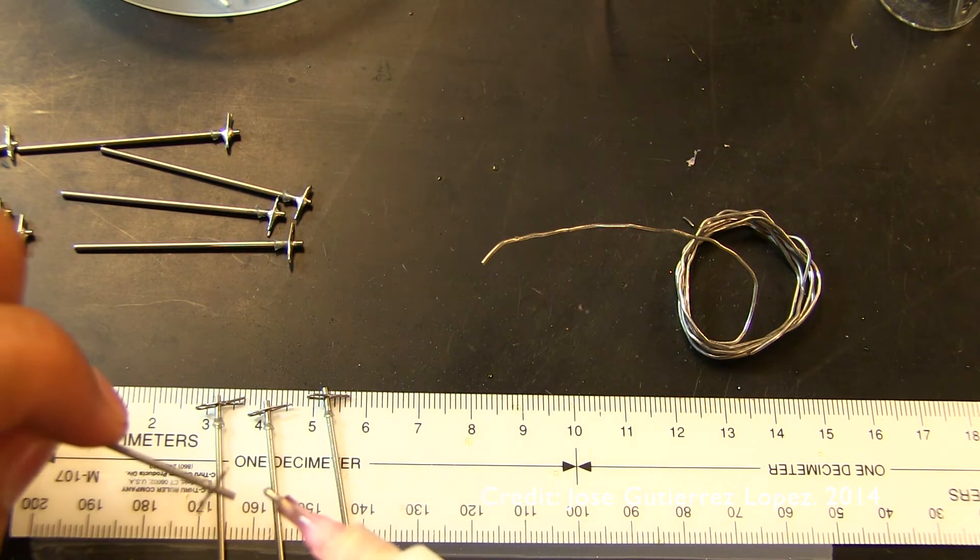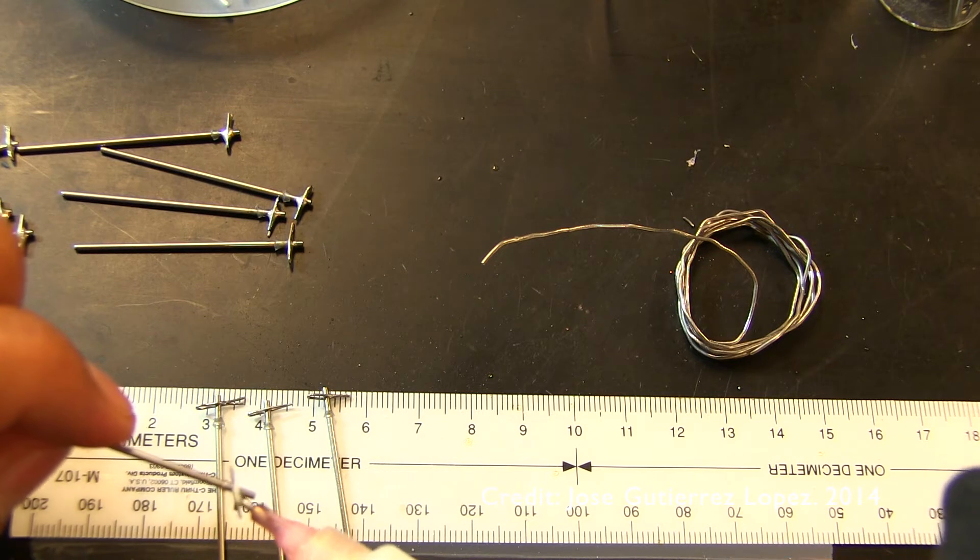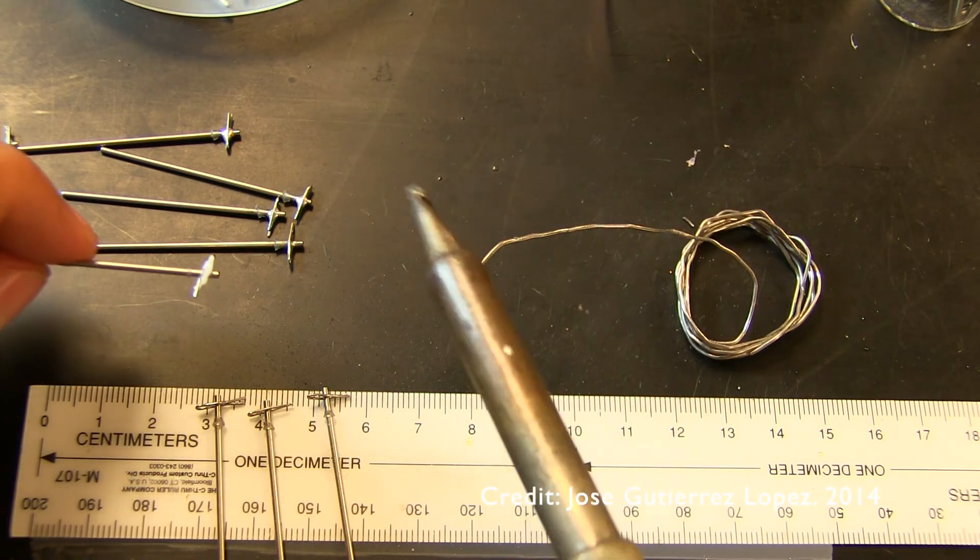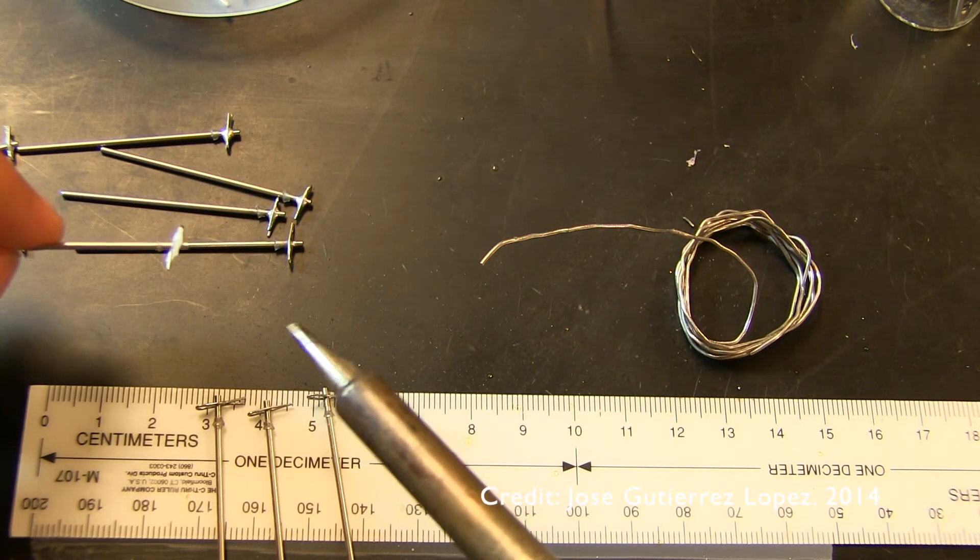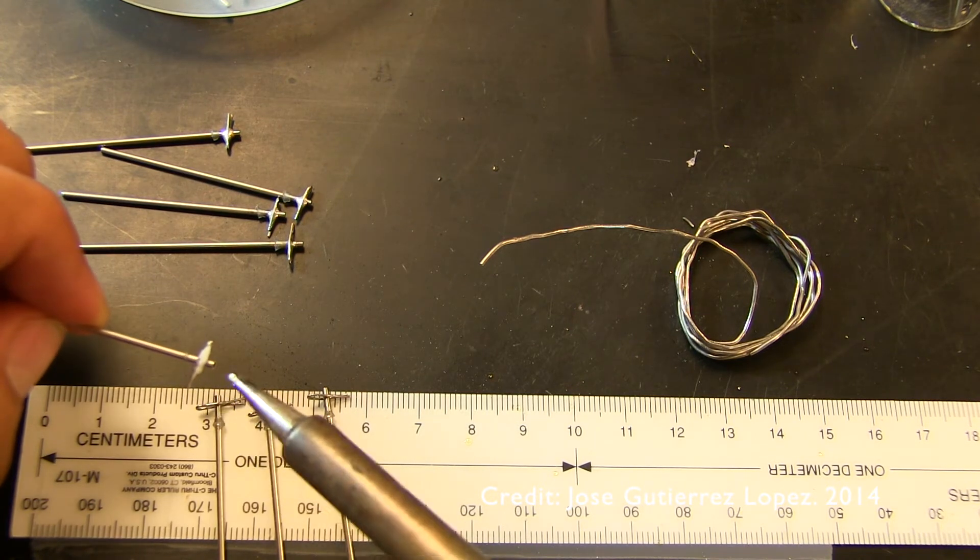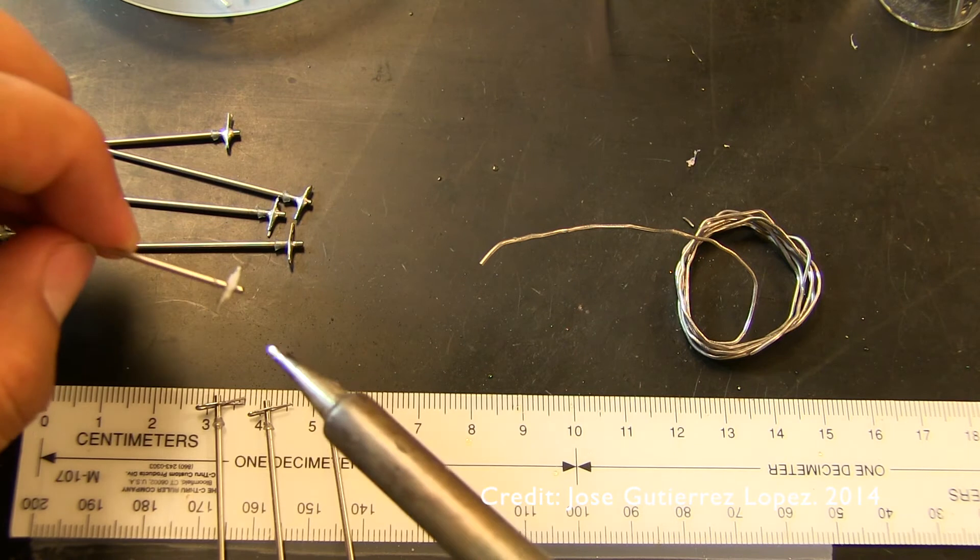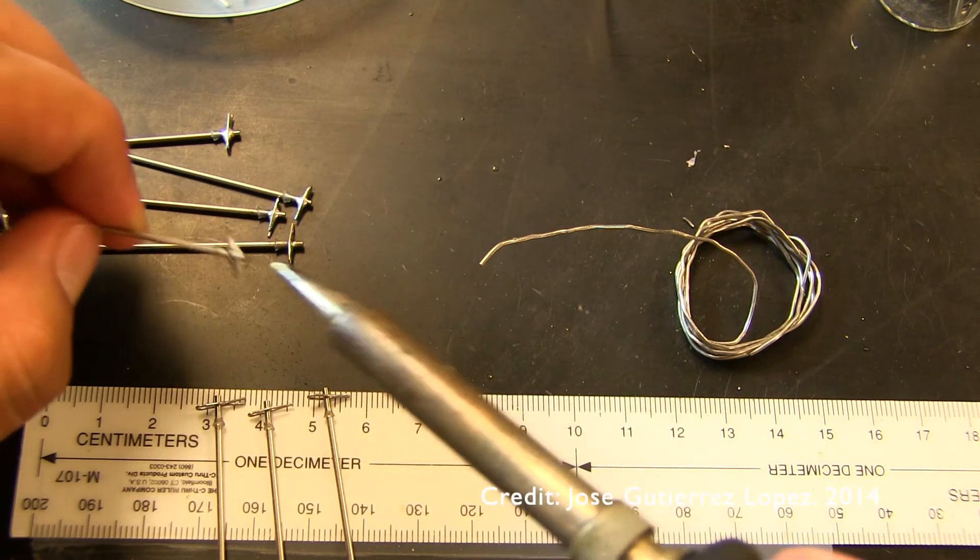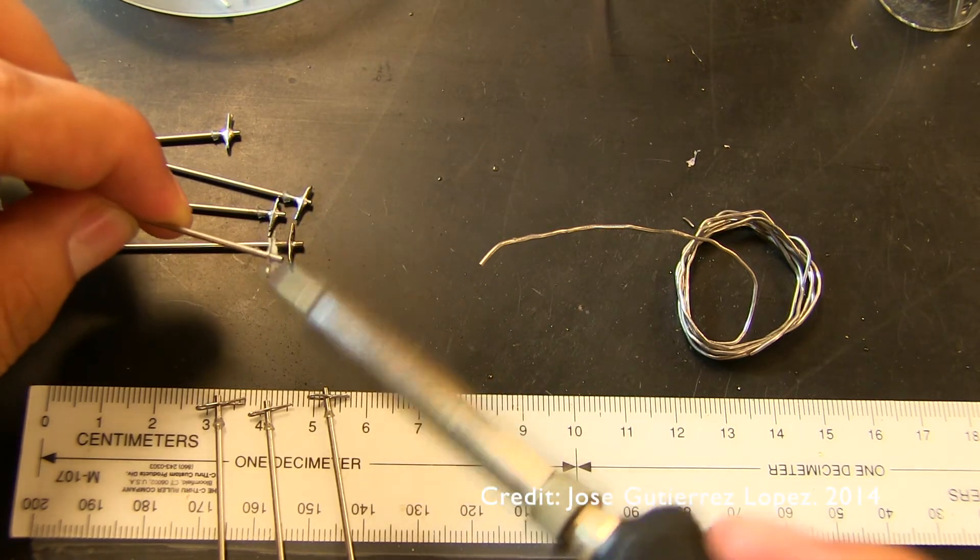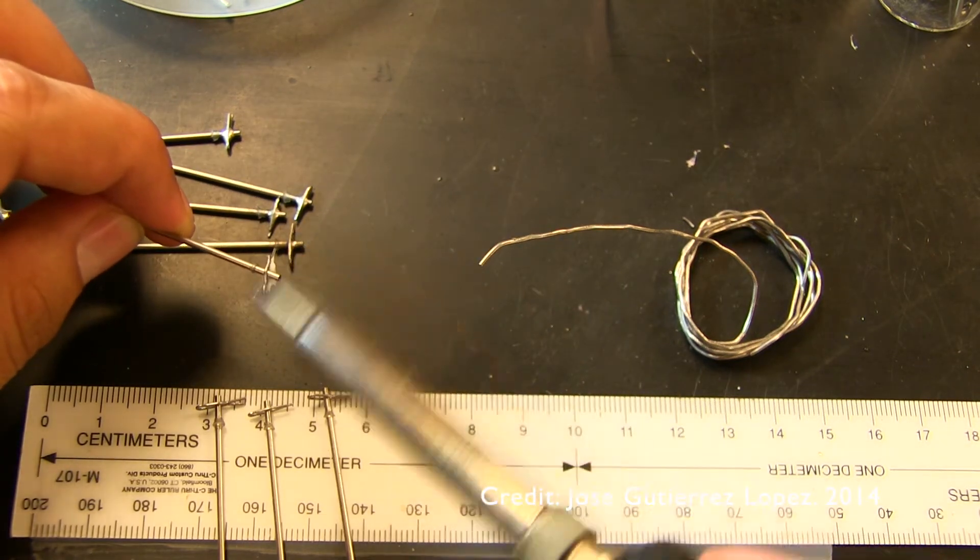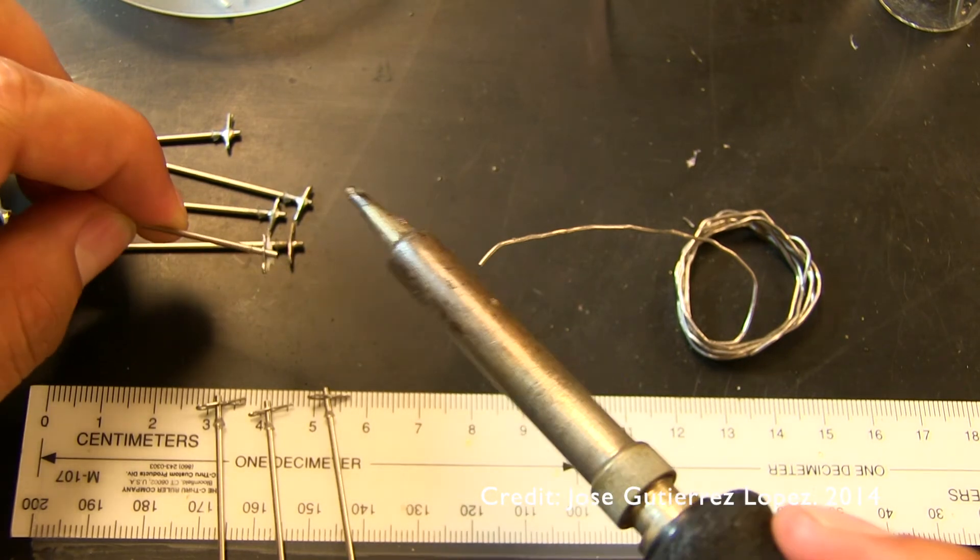So this is fairly easy. I'd say it doesn't take more than a minute, except for the times when either there's some glue on the tip of the needle or there's some residue that just doesn't let the solder stick to the wire and the needle. In that case, there's nothing you can do. You just have to sand everything again and just redo it pretty much.